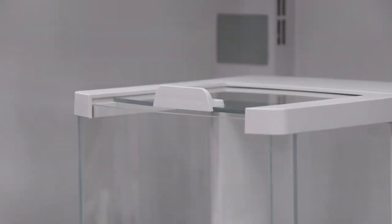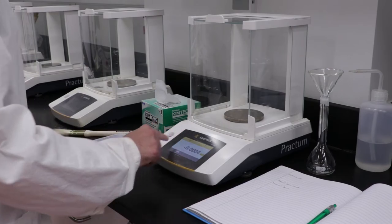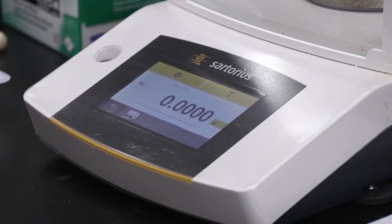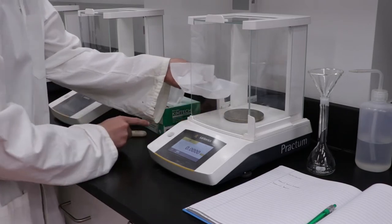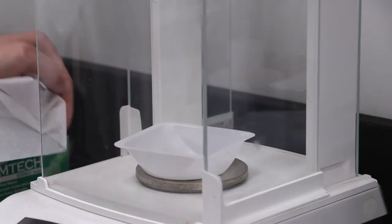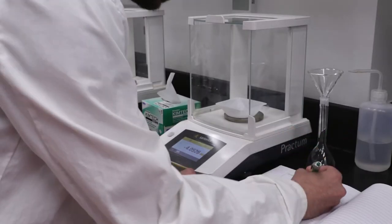Before taking a measurement ensure the balance is clean and that all doors are closed. First tare the empty balance then place your solid inside using a kim wipe. Obtain an accurate mass of the weighing boat plus the sample on the analytical balance. Record the mass in your notebook.